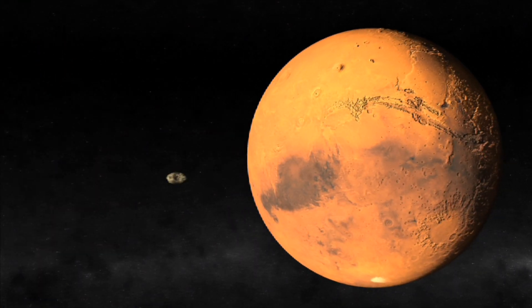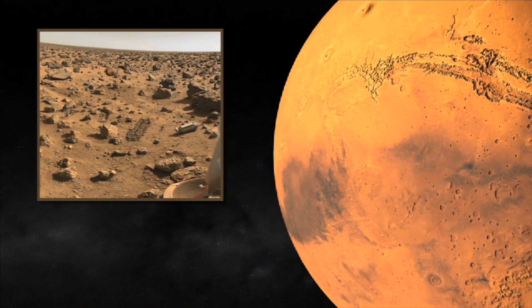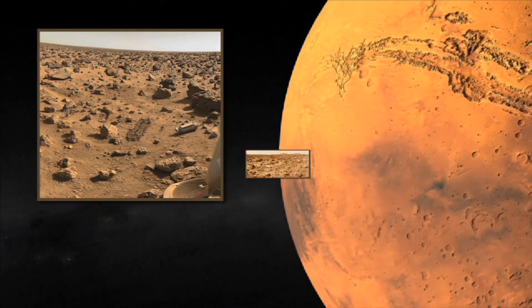On July 4th, 1997, the Mars Pathfinder landed on the surface of Mars and took many pictures of its surface.